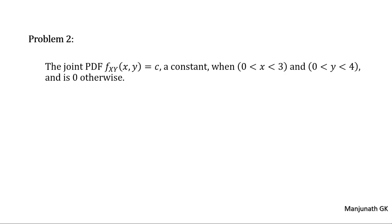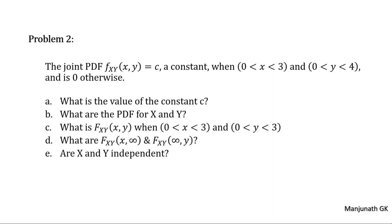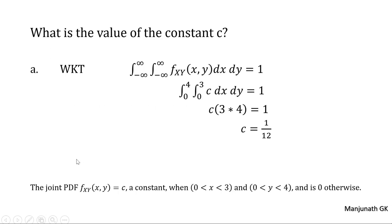Problem number 2: the same problem, but the limits are changed. Here X varies from 0 to 3 but Y varies from 0 to 4. For such a joint PDF, calculate the value of C, fx(x) and fy(y), the bivariate CDF, Fx(x) and Fy(y), and whether X and Y are independent. To calculate the value of C, use the volume-under-the-curve property, replacing minus infinity to plus infinity by 0 to 3 and 0 to 4. This gives C = 1/12.